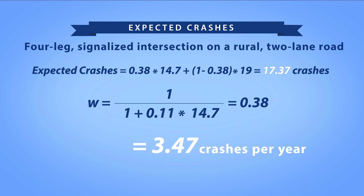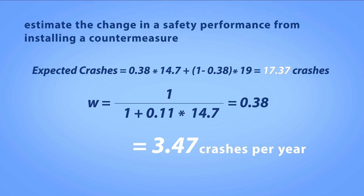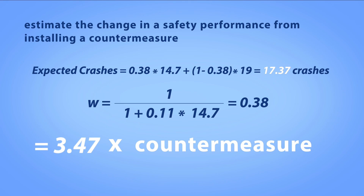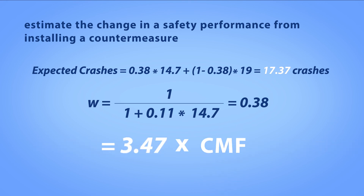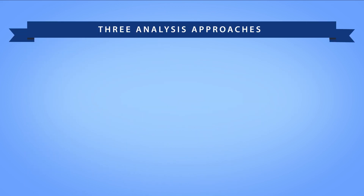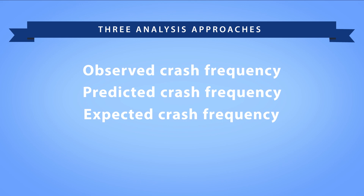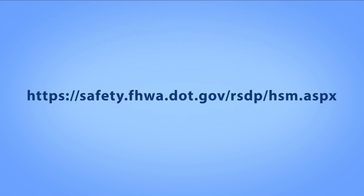For further instruction on the use of these approaches, refer to the HSM and the resource webpage at the end of this video. If you wish to estimate the change in safety performance from installing a countermeasure such as centerline rumble strips along a rural two-lane road, you will need to apply a crash modification factor, or CMF, to the estimated long-term safety performance. This video demonstrated the use of three analysis approaches to estimate safety performance: observed, predicted, and expected crash frequency. At the Federal Highway Administration, safety is our top priority. For more information, visit us online at safety.fhwa.dot.gov.